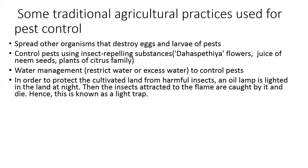In order to protect the cultivated land from harmful insects, an oil lamp is lit in the land at night. The insects attracted to the flame are caught by it and die. Hence this is known as the light trap.